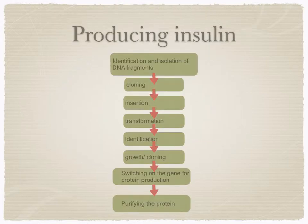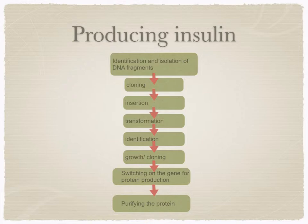Let's have a look at producing insulin. We've seen how we can use gene technology to introduce a gene into a vector. This vector is put into a host cell — bacteria — via the process of transformation. These bacterial cells then contain the recombinant DNA and need to be identified. Once identified, they're grown up. Then we need to look at how to switch on this gene so that it produces the protein insulin. This is controlled by a region of DNA called the promoter.